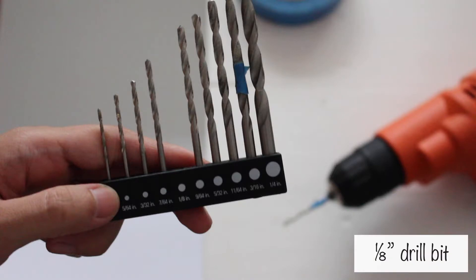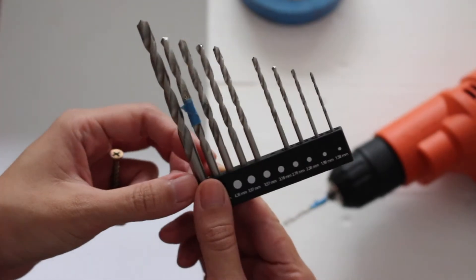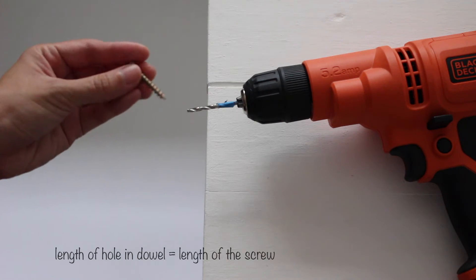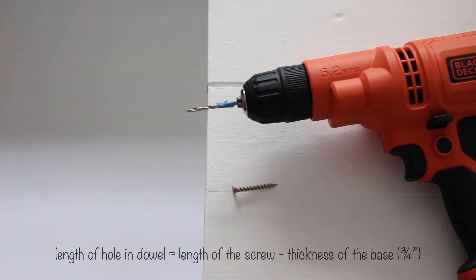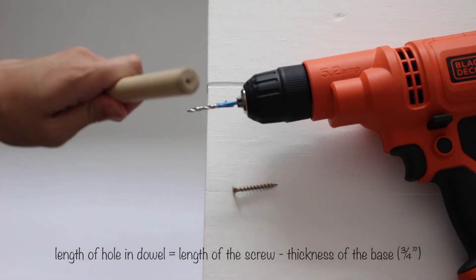With a 1⅛ inch drill bit, I drilled a hole at the bottom of the dowel. I drilled it to be the length of the screw, minus the thickness of the base. I taped the drill bit to know when to stop.